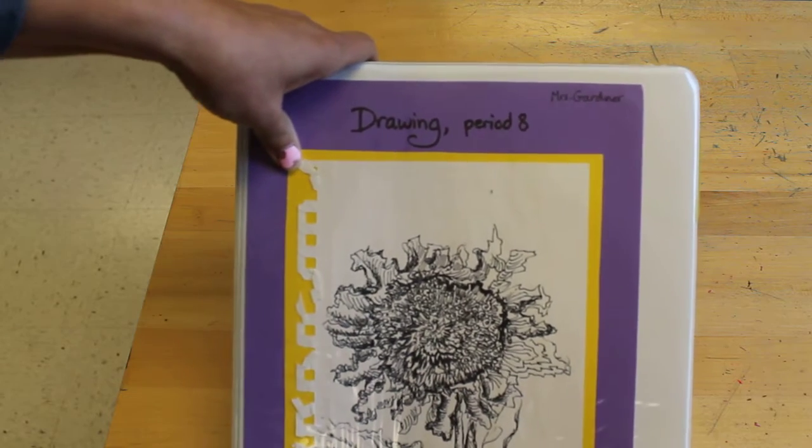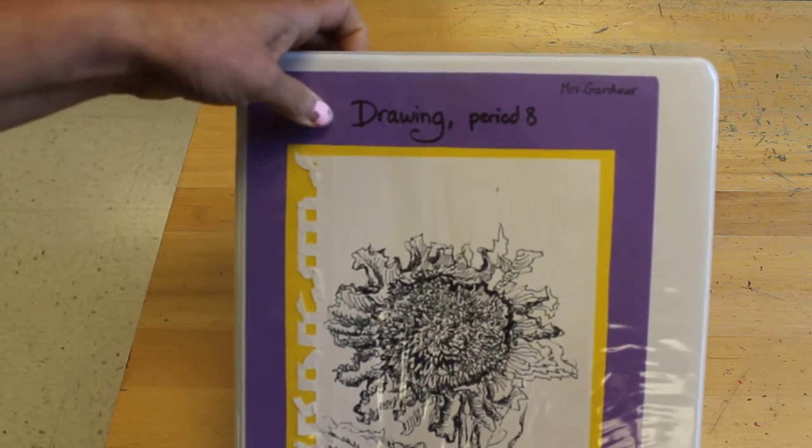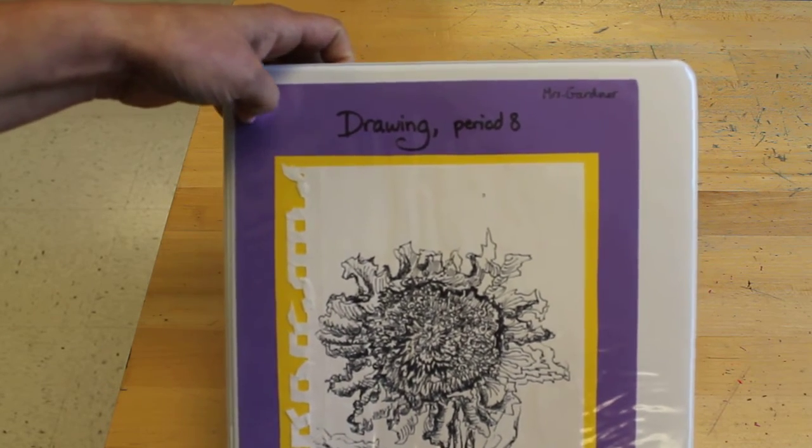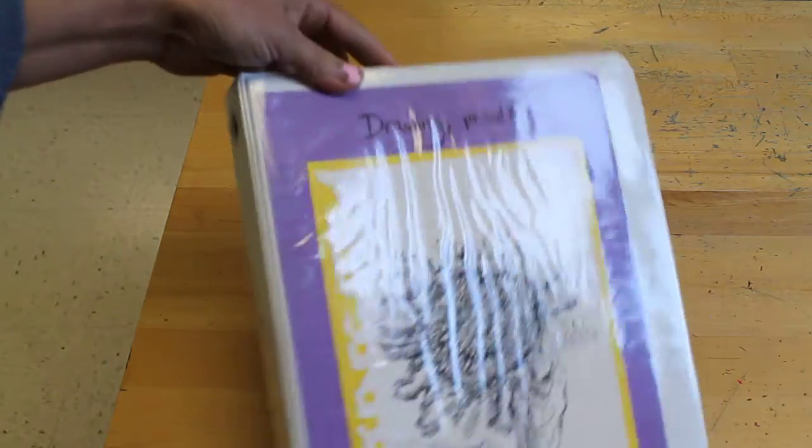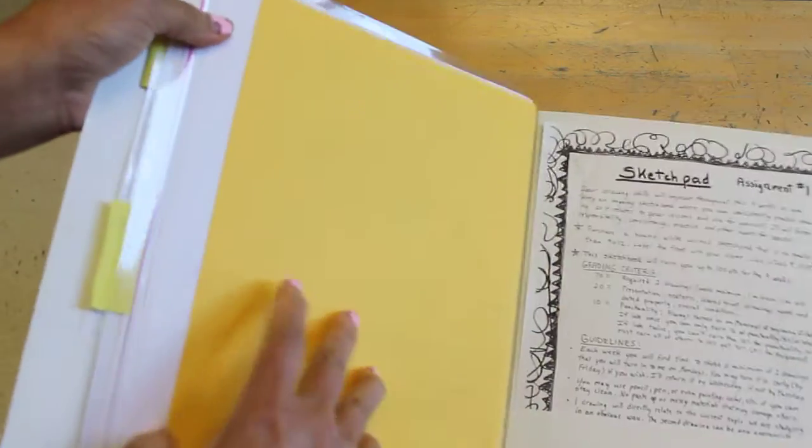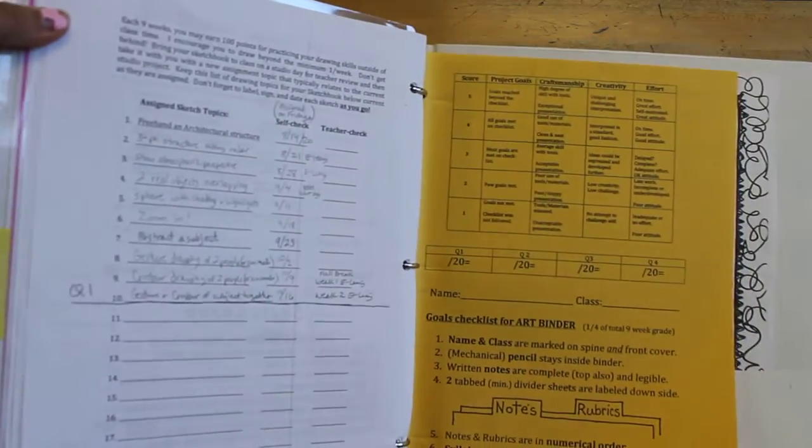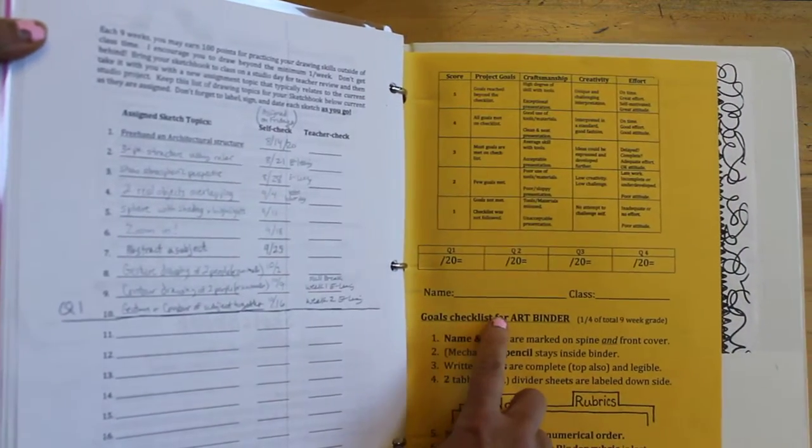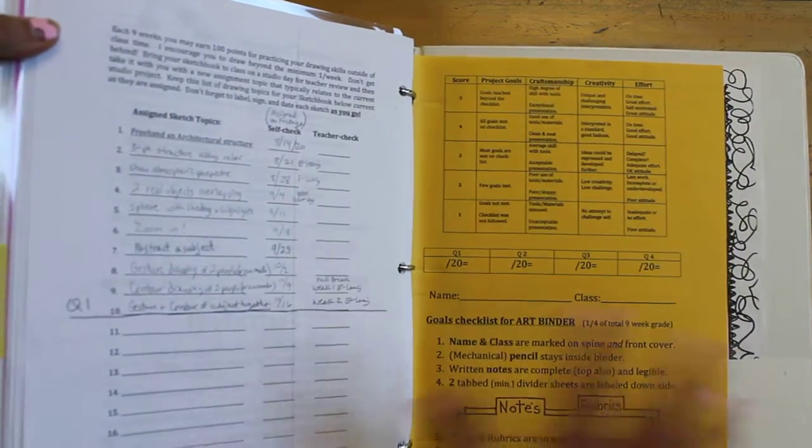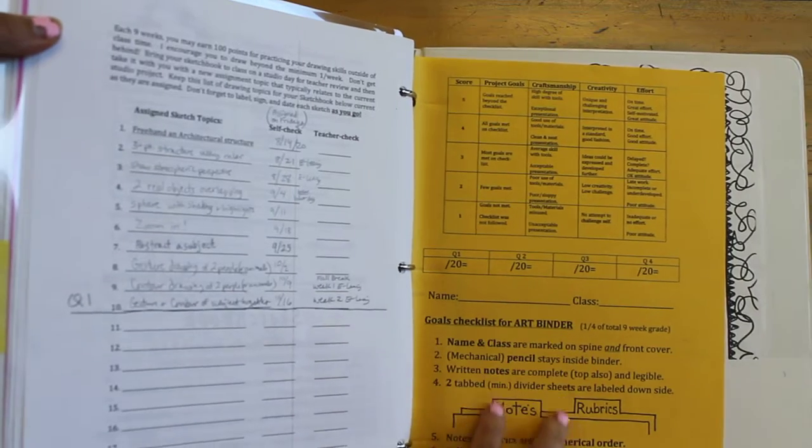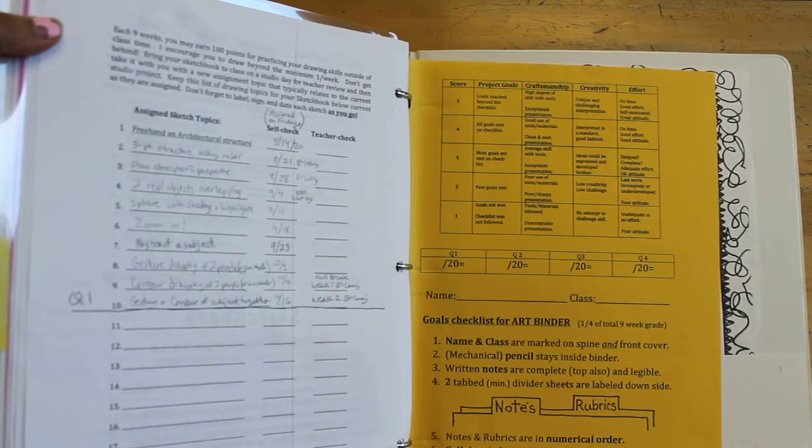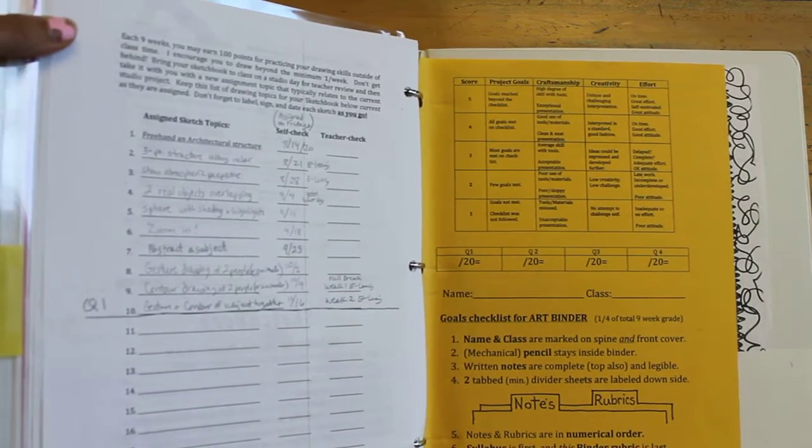When you come back to school bring it back and I'll start grading them at least by Tuesday. Monday I might be passing out some rubrics and things to put in there. And so speaking of rubrics, at the very back there is that special yellow golden yellow rubric that says goals checklist for the art binder which gives you the requirements if you want a full grade for your art binder and you get a hundred points each nine weeks so this is important.